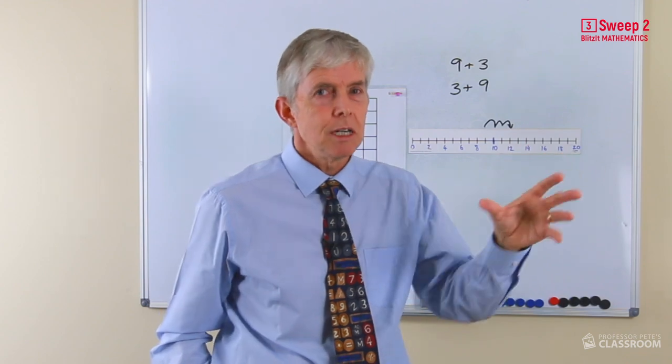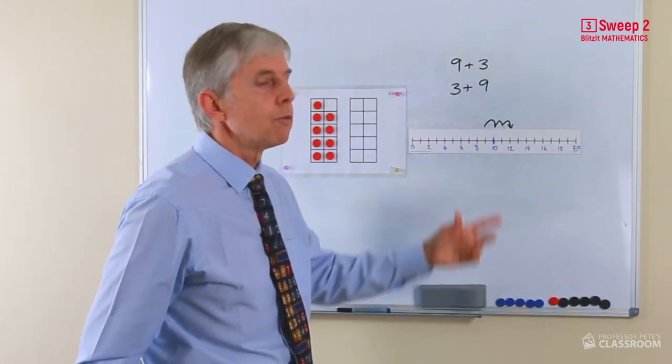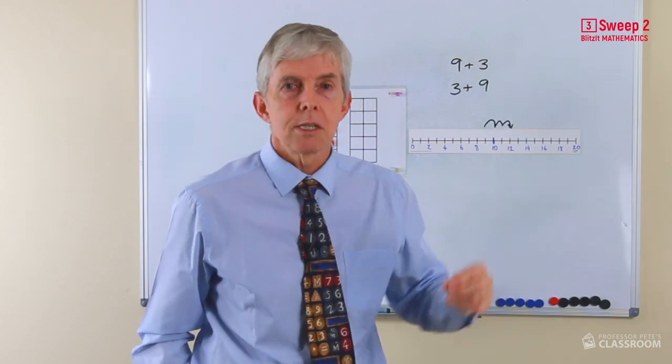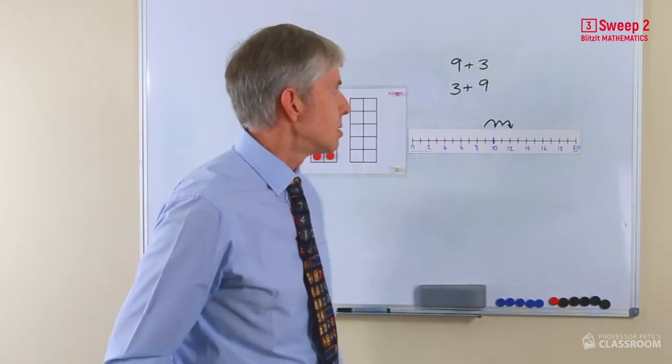You've got to keep track of the three jumps. But it shouldn't be difficult for students to see. We're just going on three more numbers, three more places in the counting sequence. And there's the answer, 12.